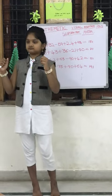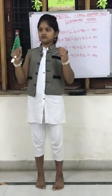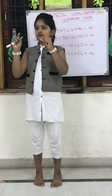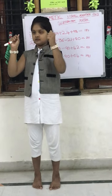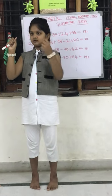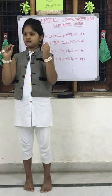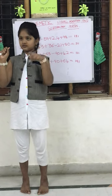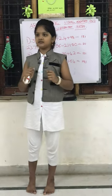Let us answer the last and final question. 13, 38 add 64, less 49, 70, less 25. Answer is 98. Correct.